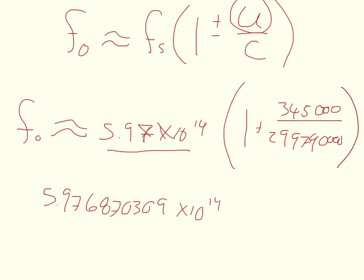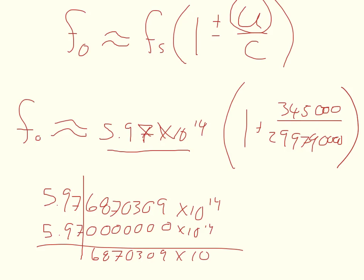For part B, it wants to know what was the change of frequency. So my original frequency, 5.97000000 times 10 to the 14th. I just subtract these. All of this drops off, and I get 6, 8, 7, 0, 3, 0, 9 times 10 to the what? Well, 1, 2, 3, minus 3 off of 14, you get times 10 to the 11th.